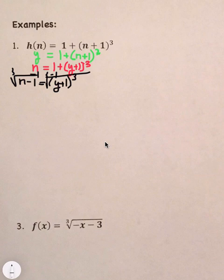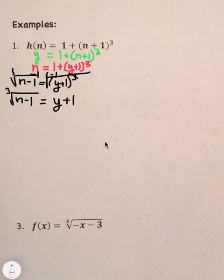So, that leaves us with on the left-hand side, cube root of n minus 1. And on the right-hand side, that third power goes away. So, we just have y plus 1.